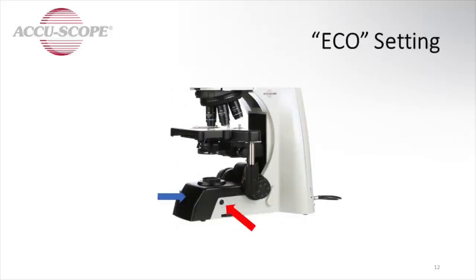The eco setting. The EXC-500 microscope is equipped with an auto shutoff feature or eco mode to conserve energy and preserve the life of the bulb. Eco mode activates when the microscope is unattended for 15 minutes. The eco sensor, identified by the blue arrow, is located on the front of the microscope base.